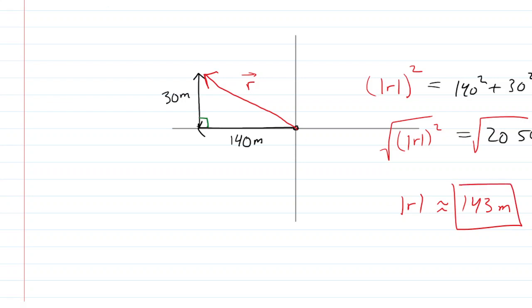And finally, in part d, we want to find the direction of this vector. So the direction would mean we need to find that angle right there. Now let's study that right triangle carefully. We can see that the tangent of that angle would equal the side that is opposite of that angle, which is 30, divided by the side that is adjacent to that angle, which is 140.